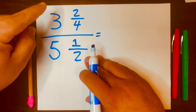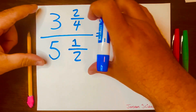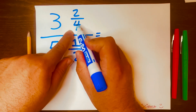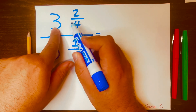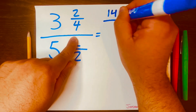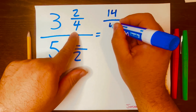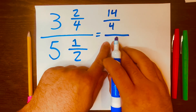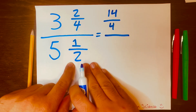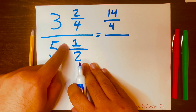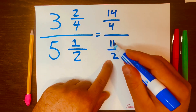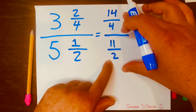Now let's solve this. The top part of the problem is three and two over four. I need to turn this into an improper fraction. Multiply four times three which is twelve, then add two to get fourteen. Keep the denominator four. Then do the same for the other mixed number: two times five is ten, plus one is eleven, giving us eleven over two.